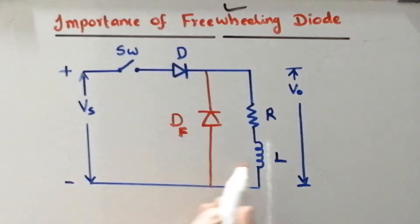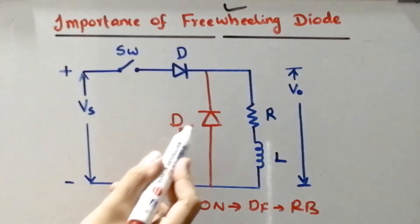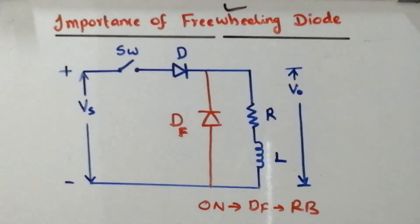During on condition the energy will be stored inside the inductor. That means during on condition, this DF will be under reverse biased condition. There won't be any current conductive path through the freewheeling diode during on condition, but energy will be stored in the inductor.